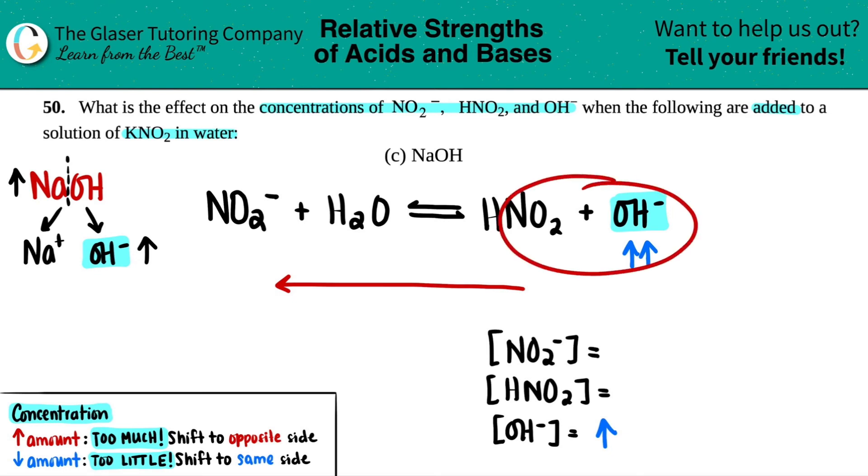So the predominant balanced equation is this, your products going to the reactants. And whenever you're going, that's always going to be an increase. So your NO2 minus would increase.